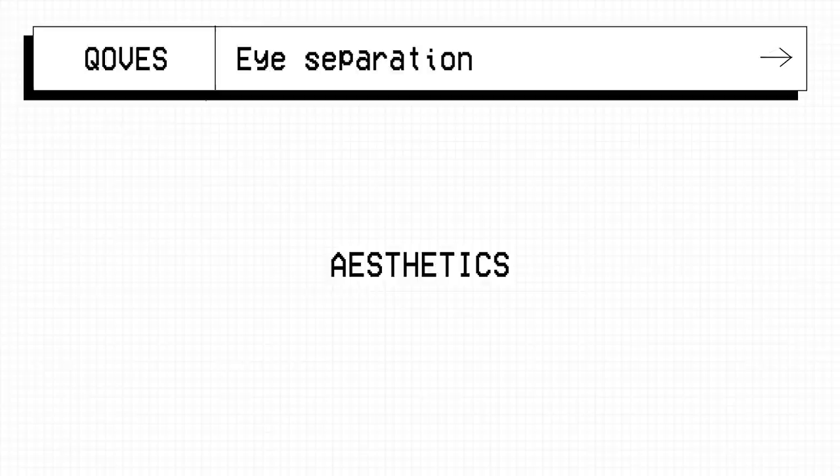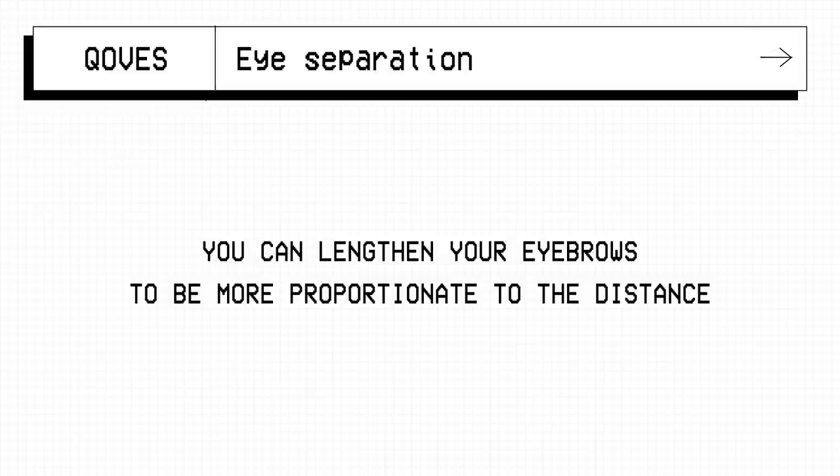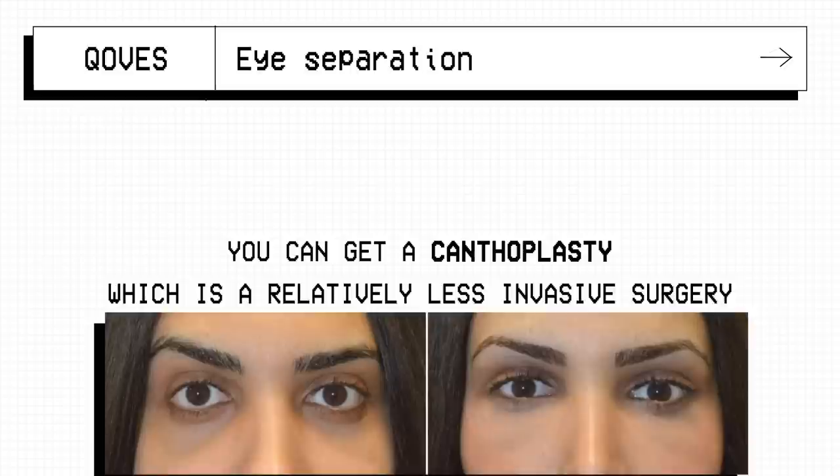Realistically there is not much you can do to change this spacing other than surgery. You can lengthen your eyebrows to be more proportionate to that distance or you can get a canthoplasty which is a relatively less invasive surgery to change the appearance of where the eye starts and ends, but it doesn't actually move its physical location.